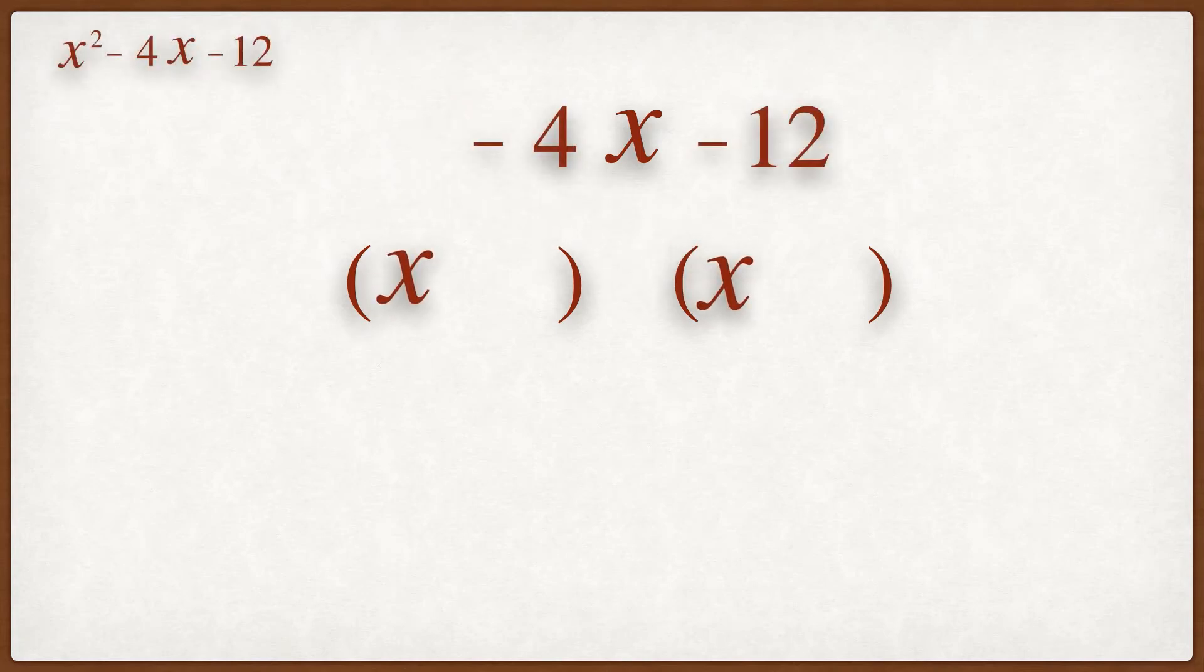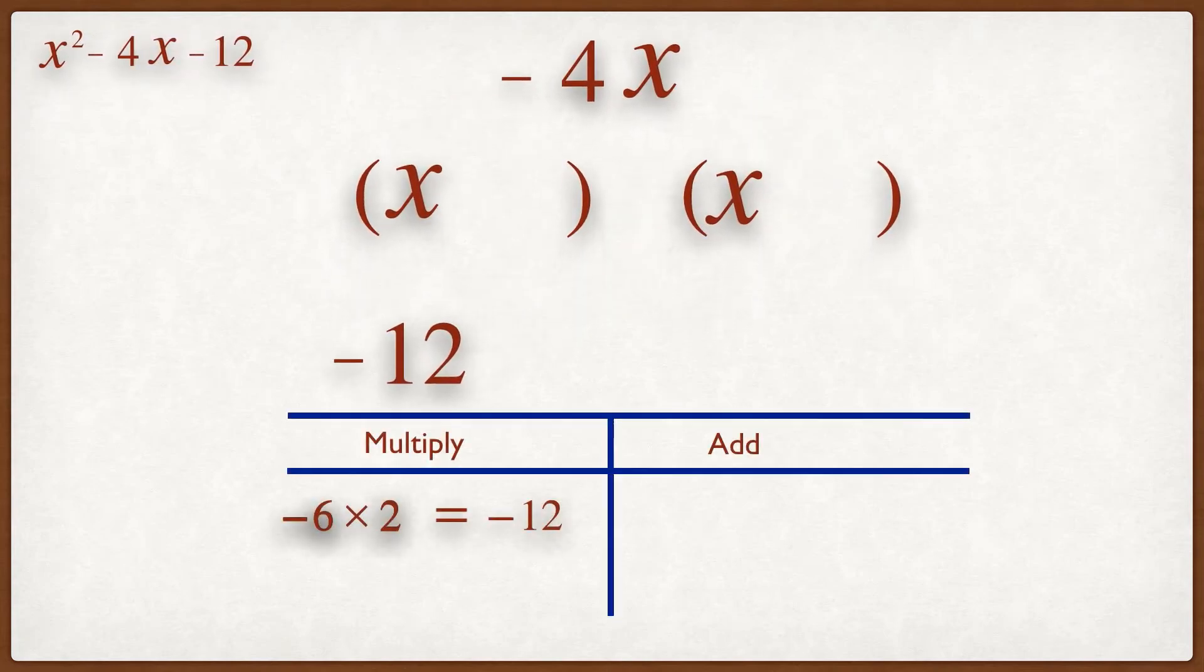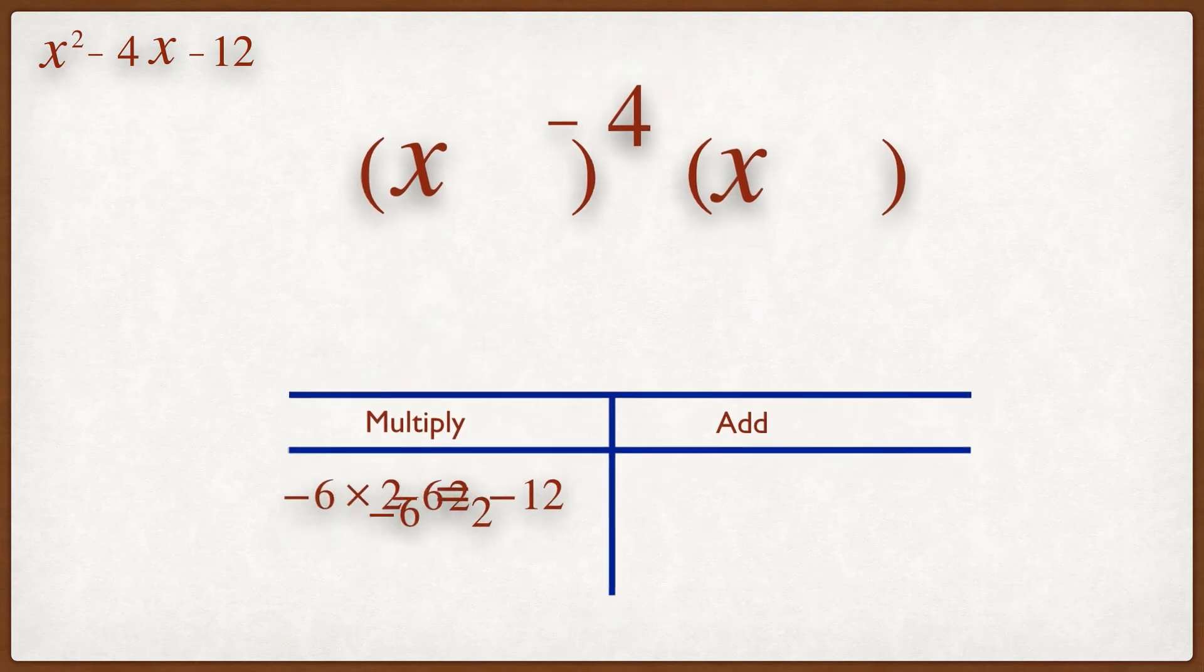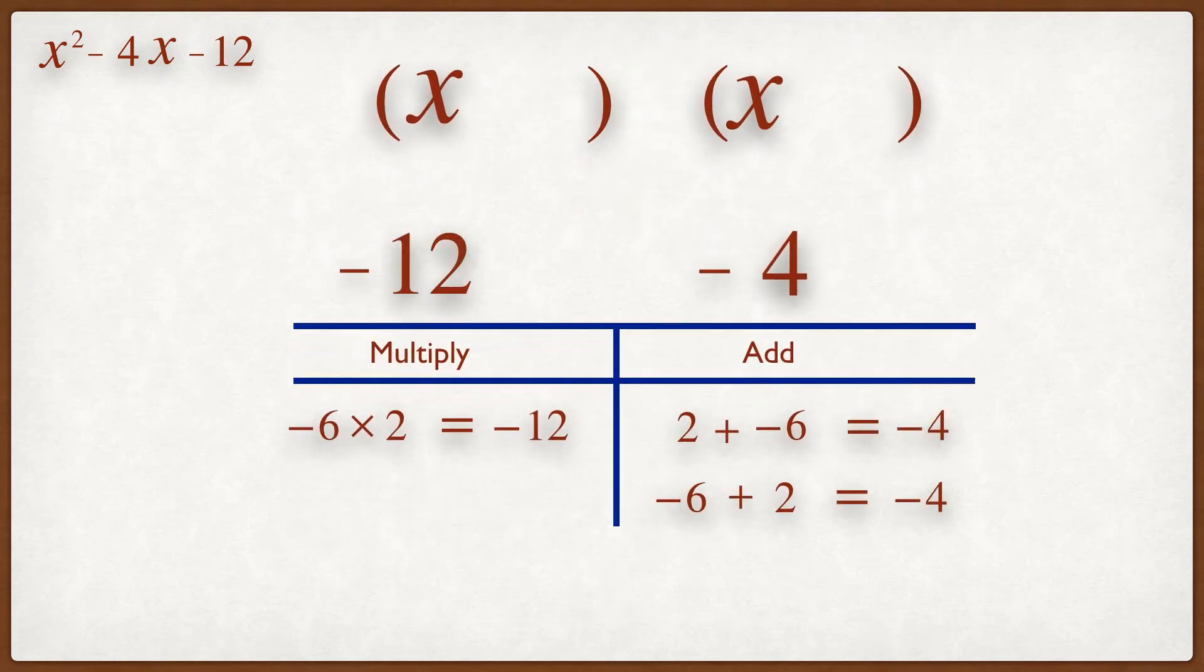Then we find a pair of factors which multiply to give you minus 12 but also add up to give you minus 4. In this case, the factors are minus 6 and plus 2.